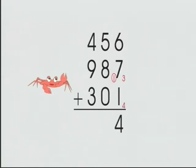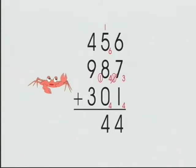4 ones — record. Move the 10s to the 10s column. 1 plus 5 is 6, 6 plus 8 is 14: 1 hundred, 4 tens. Save the 100 for later. 4 plus 0 is 4 tens — record.